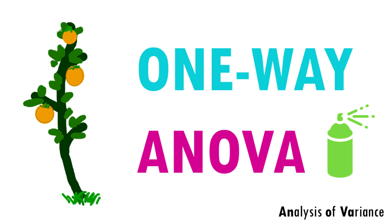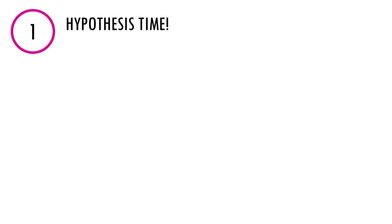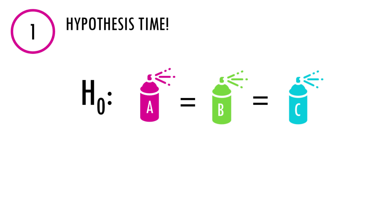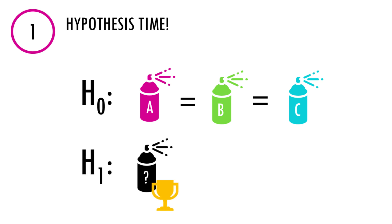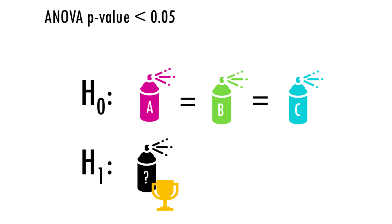Let's break down ANOVA in four simple steps. First, as with any hypothesis test, we state our null and alternative hypotheses. The null hypothesis argues that all fertilizers are equal, so there is no difference in plant height. The alternative hypothesis says that at least one fertilizer is causing a difference in plant height. The test will give us a p-value, and if it's low enough, we can say there is a statistically significant difference between at least one fertilizer.